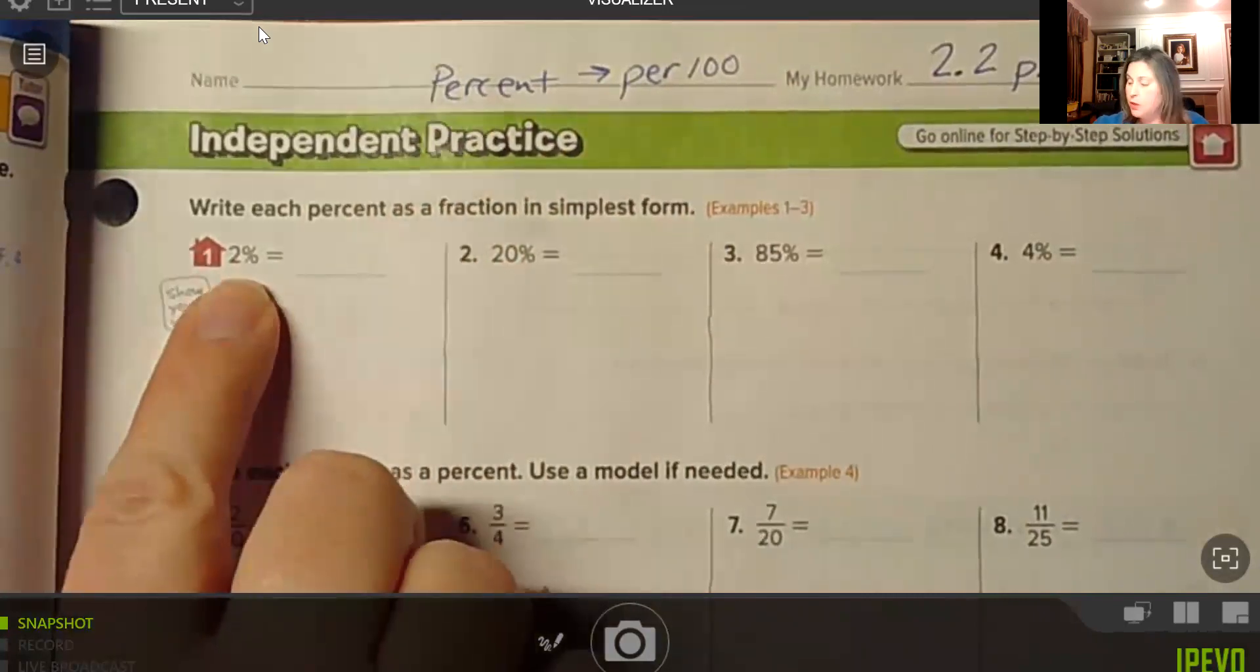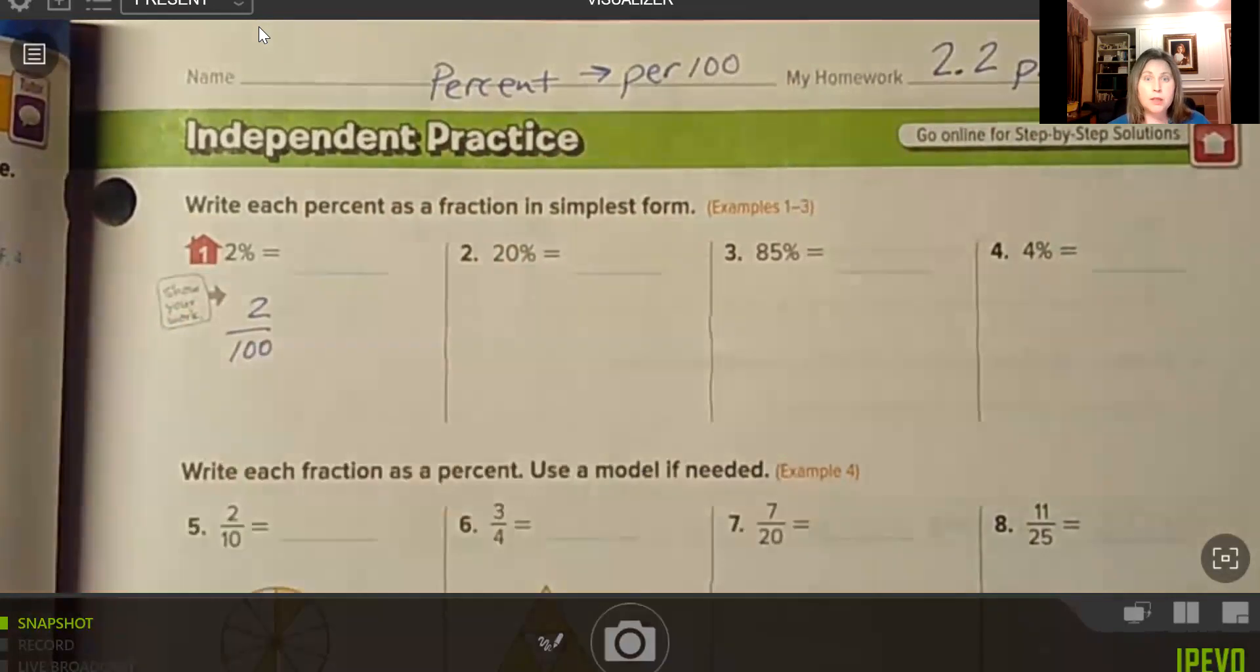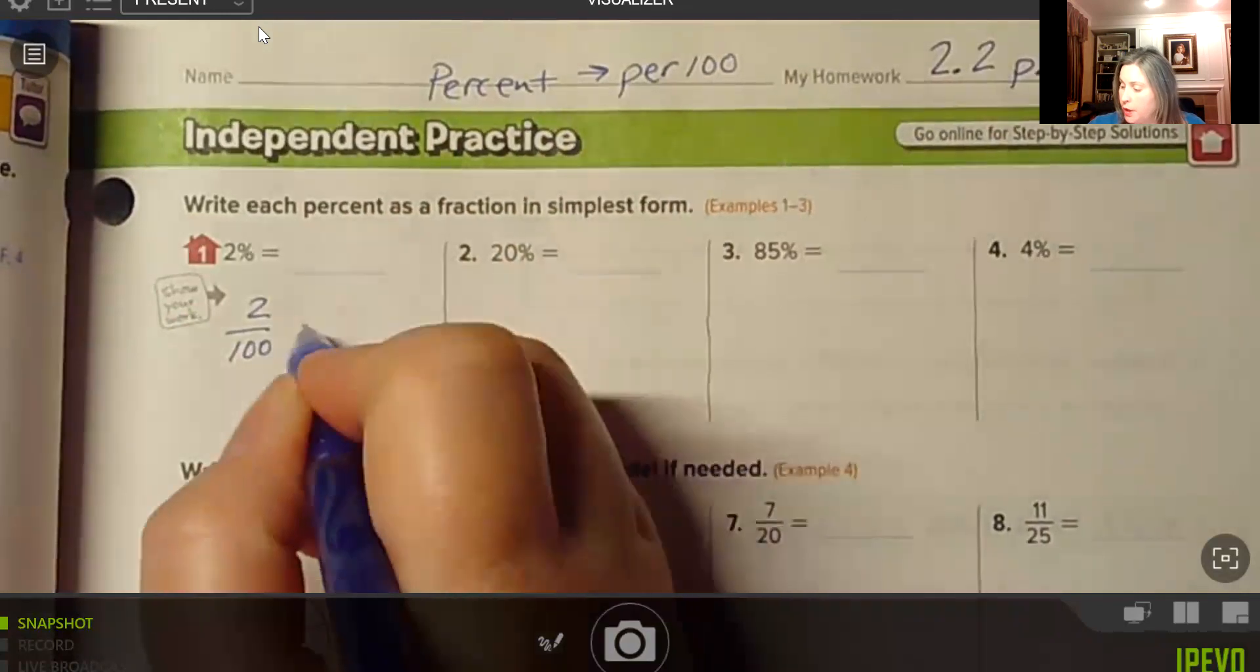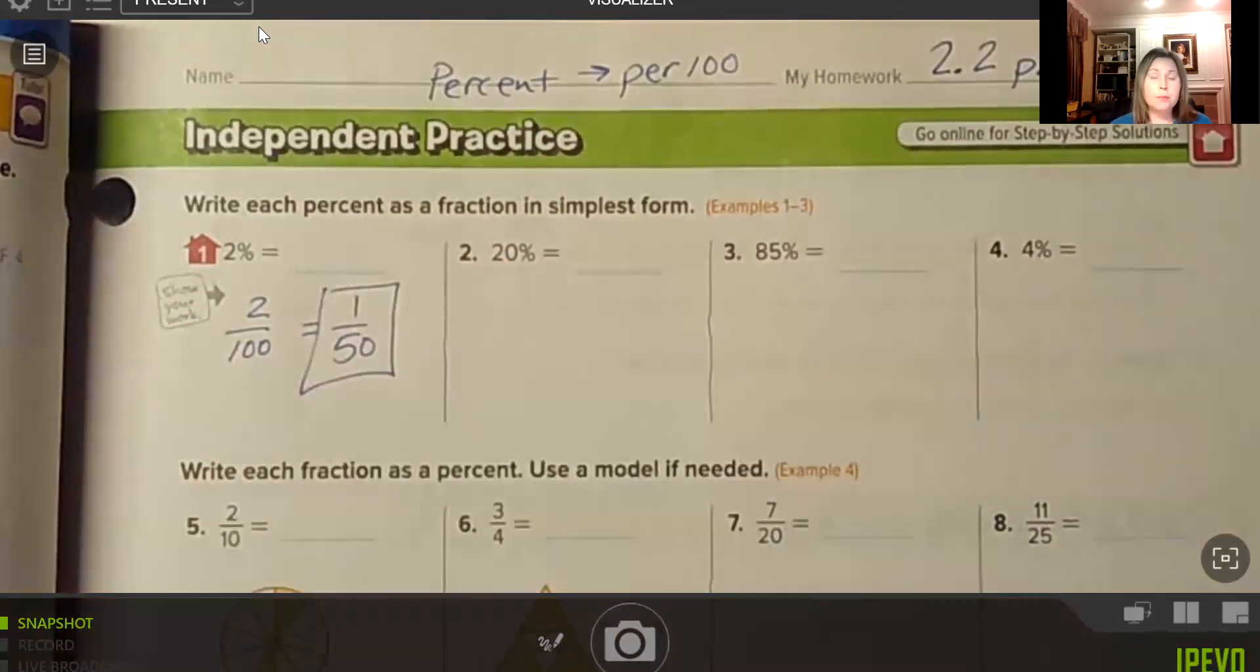So 2% means 2 per hundred. And then we can simplify that. 2 and 100 are both even. So we simplify that to 1/50 by dividing the numerator and the denominator both by 2.